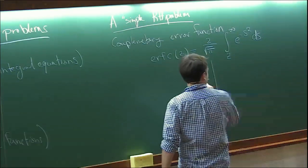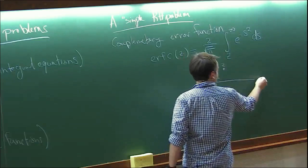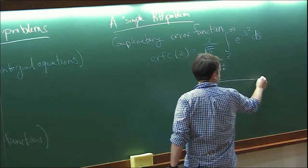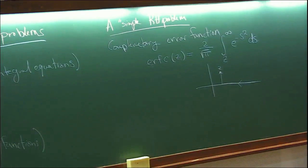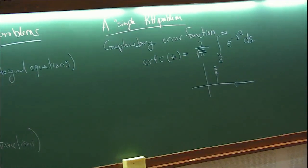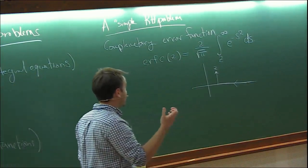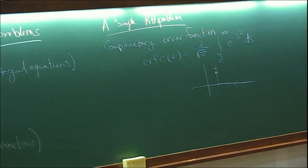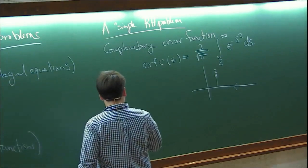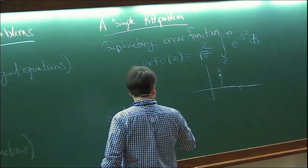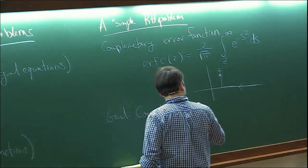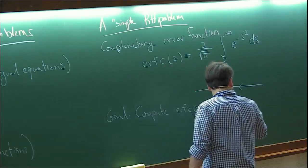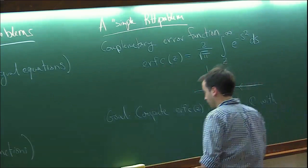If we're looking in the complex plane, I'll integrate in along the real axis and then up to the point z. The application I have in mind is I want to compute erfc(z) everywhere in the entire complex plane. Our goal is to compute it for all z in ℂ with uniform error control.